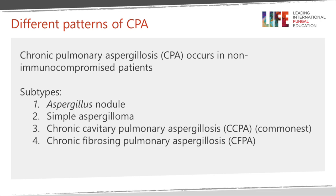The important thing to recognise with CPA is that this occurs in non-immunocompromised patients. This is quite different from the invasive aspergillosis that you see in patients on chemotherapy. The commonest sort is chronic cavitary pulmonary aspergillosis, but I'm also going to look at aspergillus nodules, the simple aspergilloma, and the less common but quite important chronic fibrosing pulmonary aspergillosis.